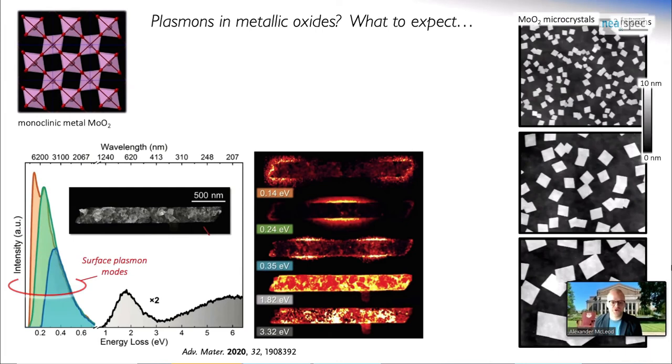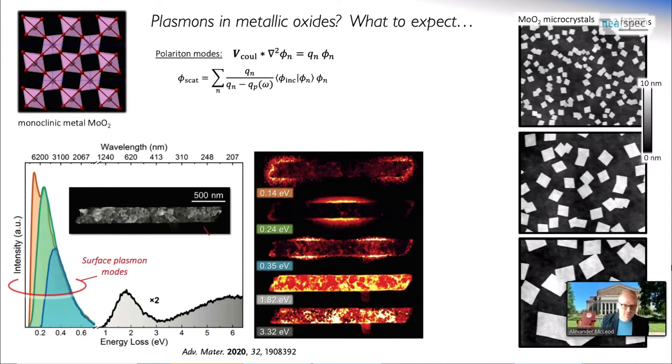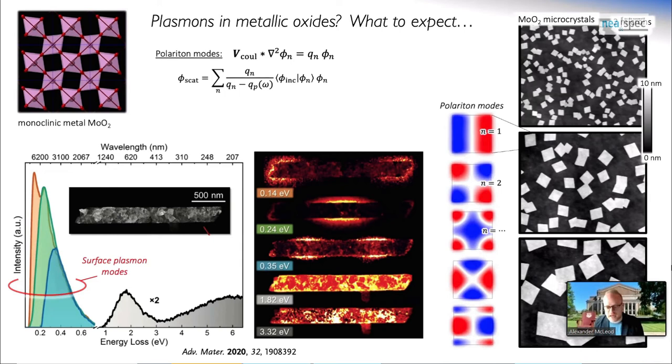These are visualizations by electron energy loss microscopy of the actual distributions in the plasmonic field at energies that are relevant to our imaging with SNOM. Our collaborators delightfully grew microcrystals of different dimensions, ranging from hundreds of nanometers to upwards of 10 microns. Now we have to think what we expect to see.